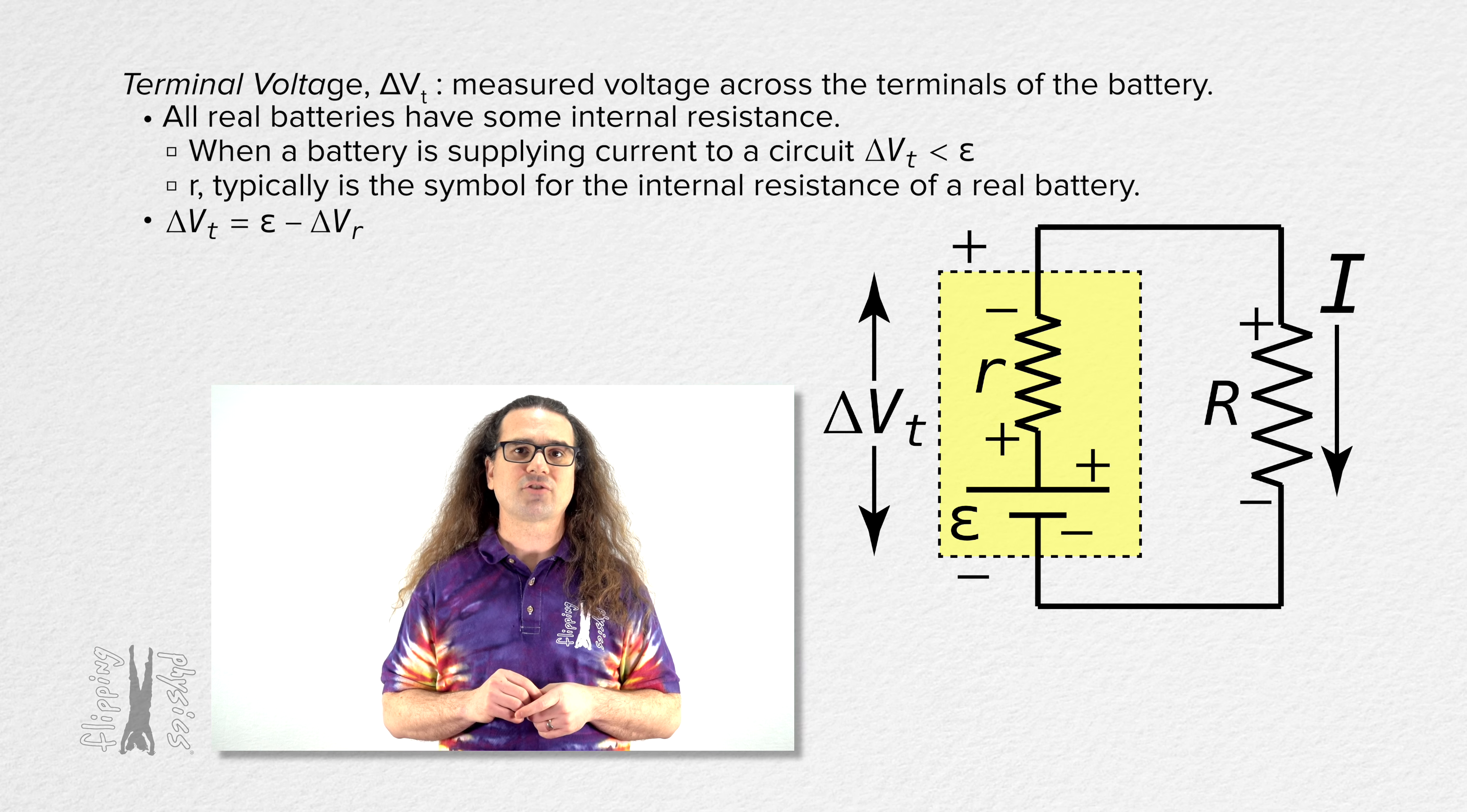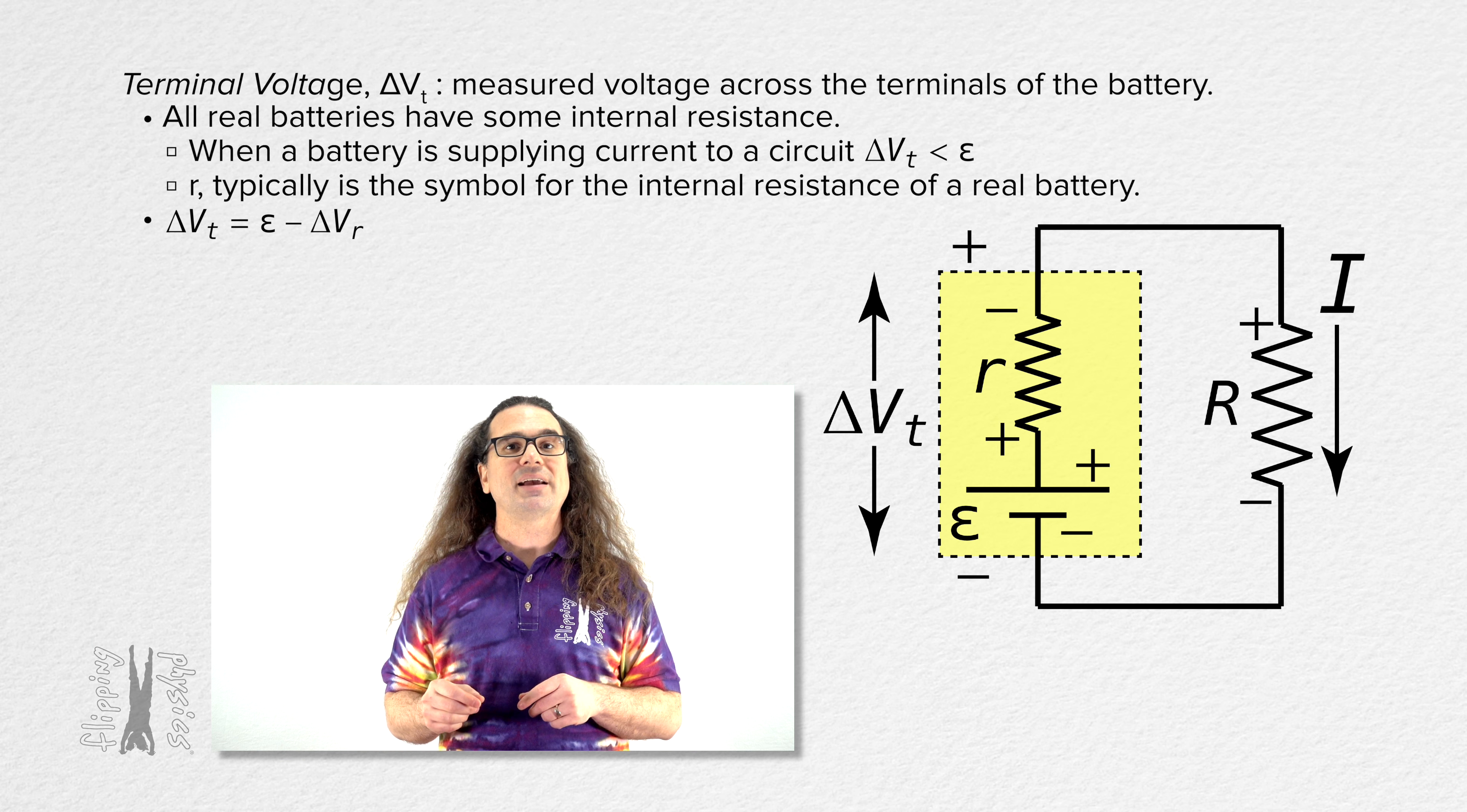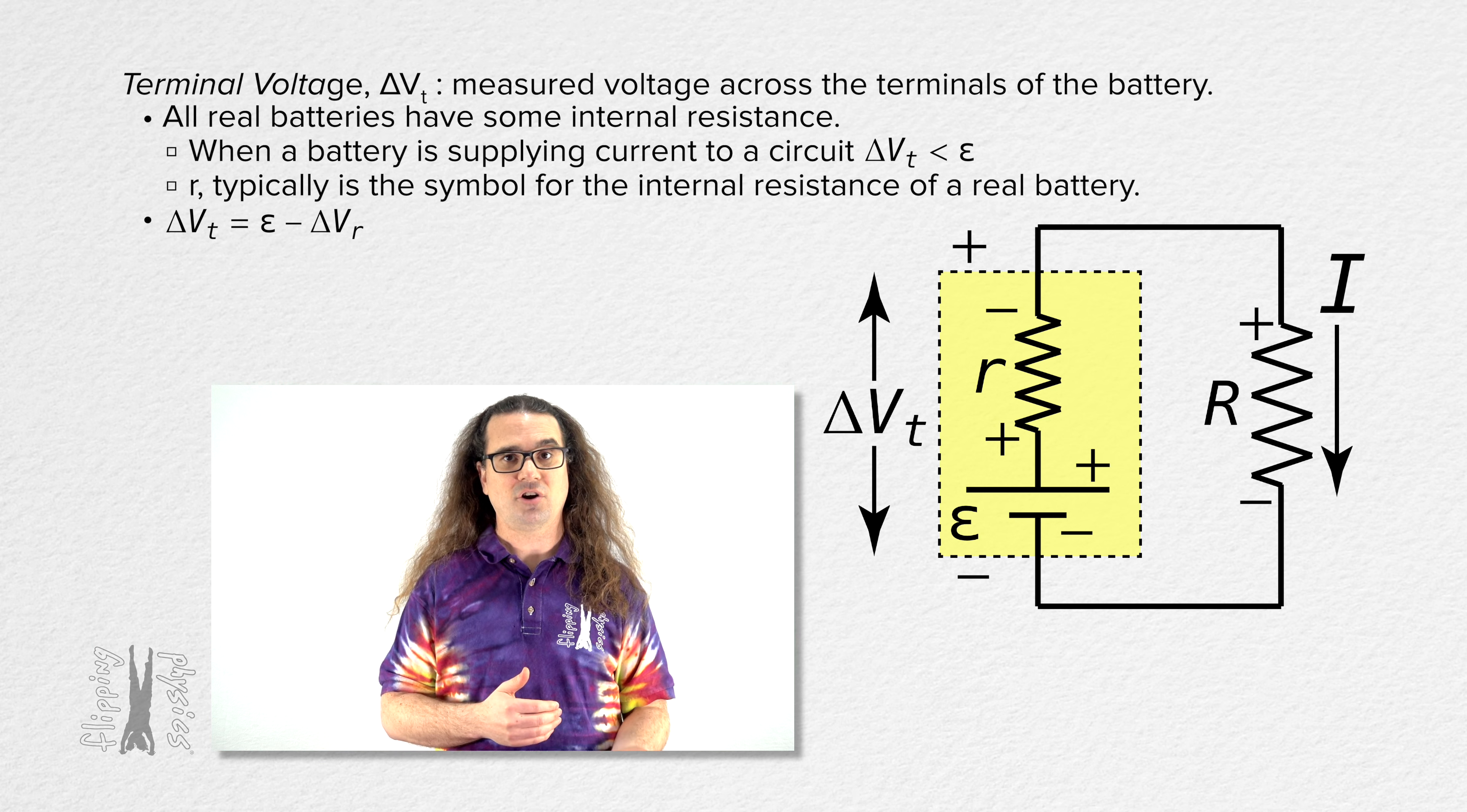The terminal voltage across the battery equals the EMF of the battery minus the electric potential difference across the internal resistance of the battery. We subtract the electric potential difference across the internal resistance of the battery because electric potential difference goes down in the direction of the current.